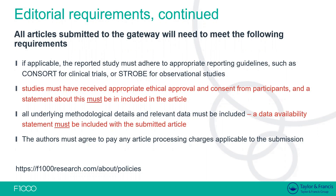Another major point — one of the first things we look for in our initial checks — is that the study has received appropriate ethical approval and consent from participants, and a statement must be included in the article to this effect. If an article involves human participants and there isn't a statement saying informed consent was obtained, we would actually reject. The consent may have been obtained, but if you've forgotten to include the statement, we would reject — but you could resubmit with the statement included.